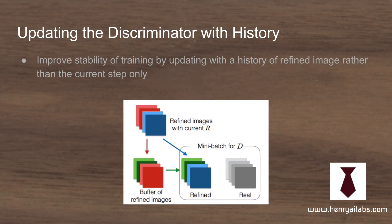Another idea is that instead of updating the discriminator on the current step alone, they keep a history of refined images to update the discriminator. This idea is present in reinforcement learning and the improved techniques for training GANs paper. It really stabilizes training and avoids spiking gradients if you maintain a history buffer of previously generated images.